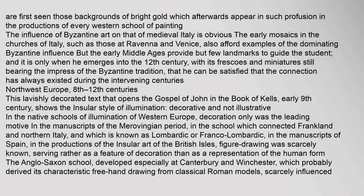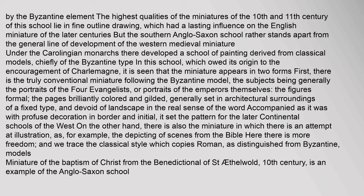North-West Europe, 8th–12th centuries. This lavishly decorated text that opens the Gospel of John in the Book of Kells, early 9th century, shows the insular style of illumination — decorative and not illustrative. In the native schools of illumination of Western Europe, decoration only was the leading motive in the manuscripts of the Merovingian period, in the school known as Lombardic or Franco-Lombardic, and in the manuscripts of Spain. In the productions of the insular art of the British Isles, figure drawing was scarcely known, serving rather as a feature of decoration. The Anglo-Saxon school, developed especially at Canterbury and Winchester, which probably derived its characteristic freehand drawing from classical Roman models, was scarcely influenced by the Byzantine element. The highest qualities of the miniatures of the 10th and 11th century of this school lie in fine outline drawing.